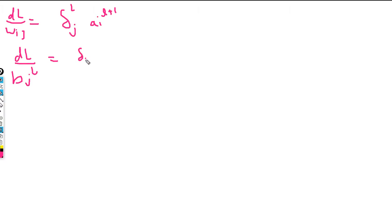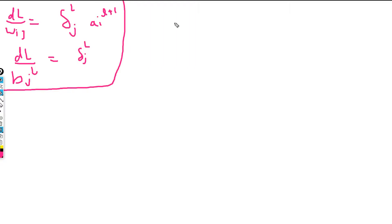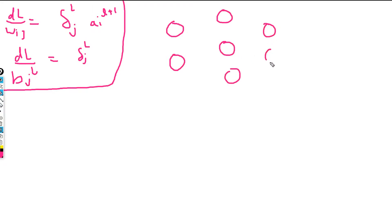This is what we derived in the previous video. Now let's make a neural network. Suppose we have these inputs, then we have this hidden layer, then another hidden layer, and then the output.